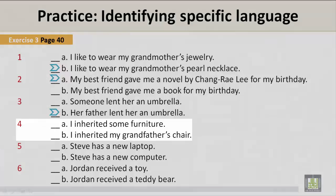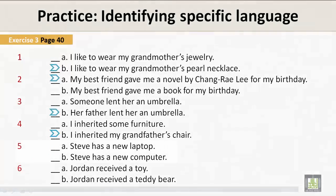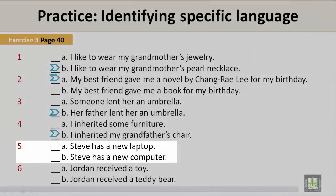Number 4. A: I inherited some furniture. Or B: I inherited my grandfather's chair. The correct option identifying specific language is B: I inherited my grandfather's chair. Number 5. A: Steve has a new laptop. B: Steve has a new computer. The correct answer is A: Steve has a new laptop.